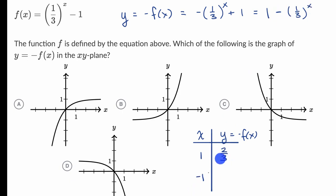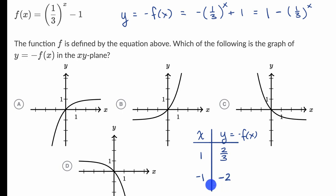When x equals negative one, what is one-third to the negative one power? That equals three, and so one minus three equals negative two.